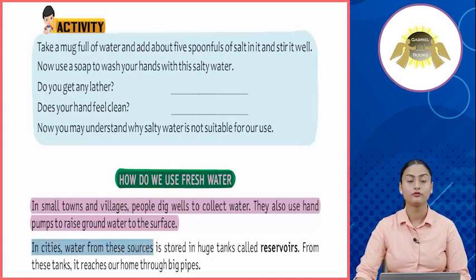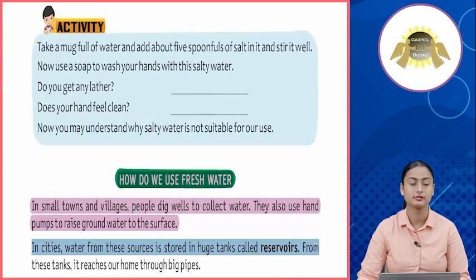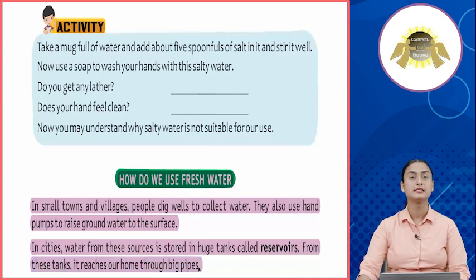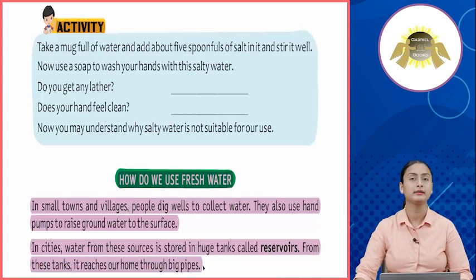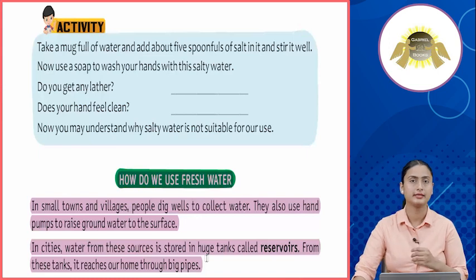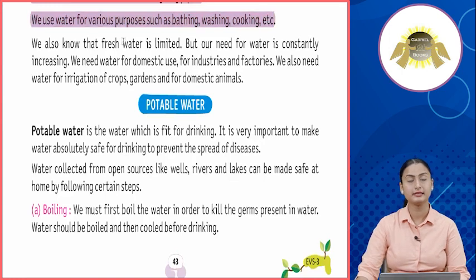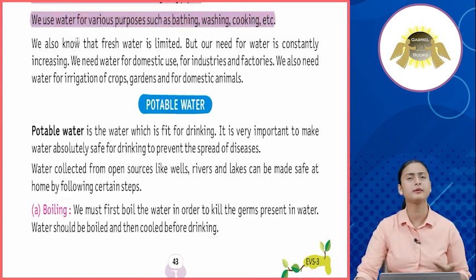In cities, water from these sources is stored in huge tanks called reservoirs. From these tanks, it reaches our homes through big pipes. Cities mein bade-bade reservoirs mein fresh water ko conserve kiya jata hai, aur uske baad pipes ke through aapke gharon mein paani aata hai. We use water for various purposes such as bathing, washing, cooking, aur khana banana aur peene ke liye.